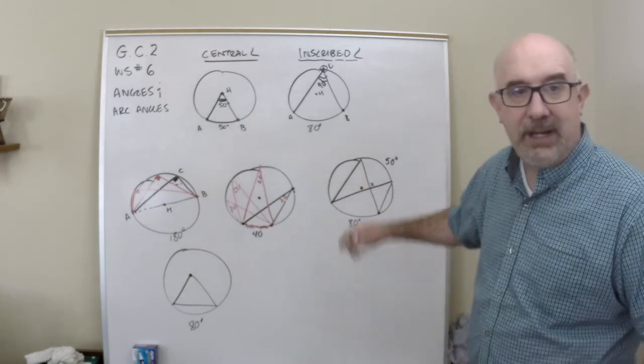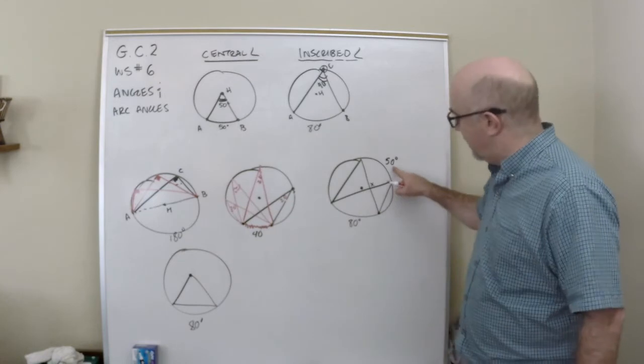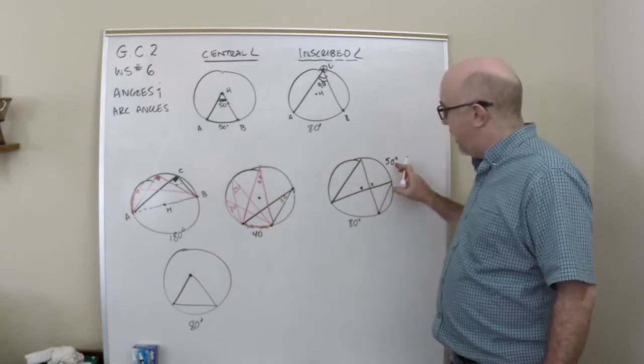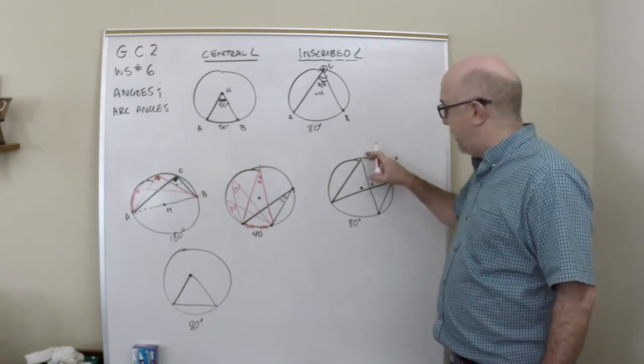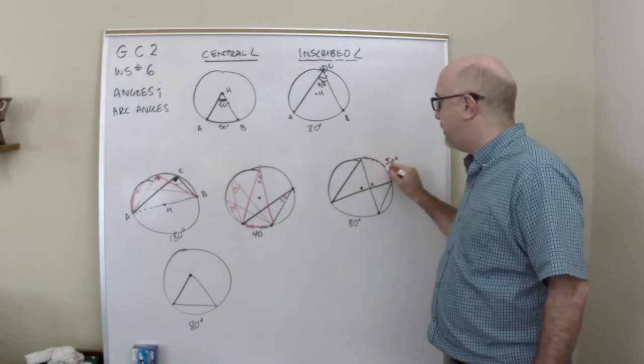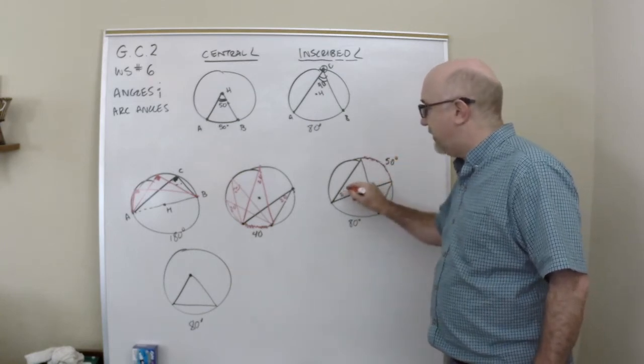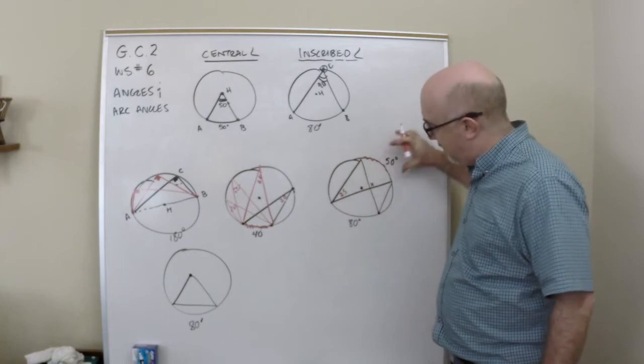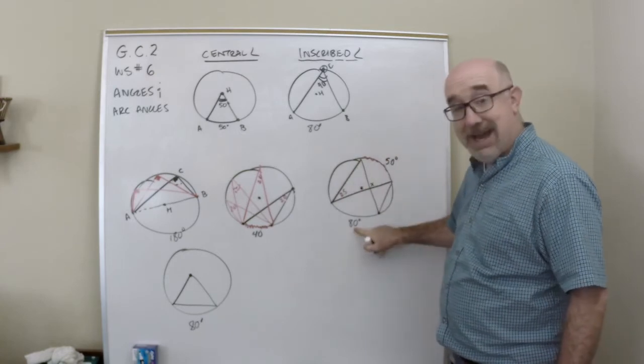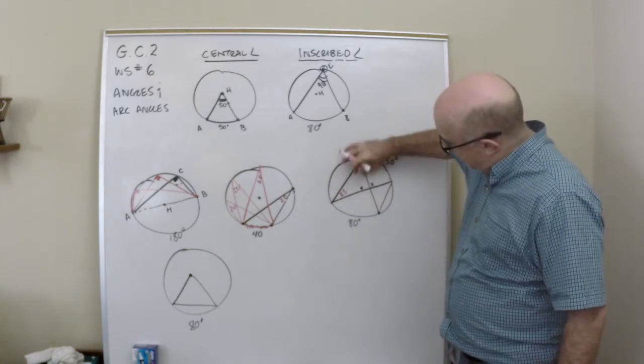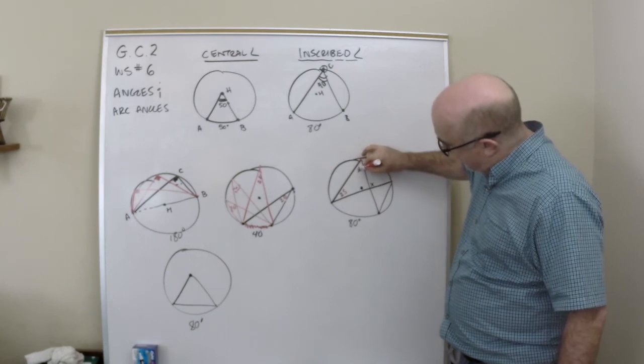So just think of this as triangles, okay? Let me show you how I would get to this one. 50 makes this arc 50 here, so this would be 25. Inscribed angle is half. This is 80, so this inscribed angle up here is 40.